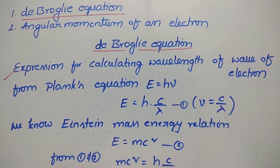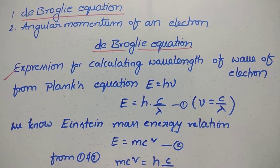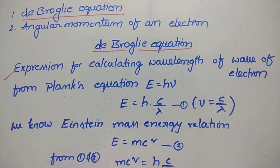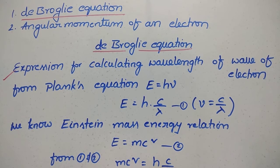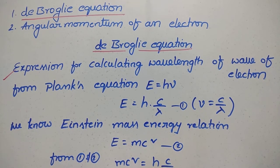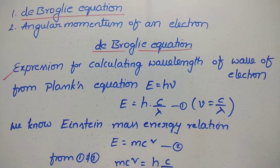De Broglie showed that matter can act like a materialistic particle and also act like a wave. When it is propagated like a wave, you have to calculate the expression for the wavelength of that particular wave of an electron. The electron's wave nature can be used to calculate the corresponding wavelength. Lambda is equal to h by mv.